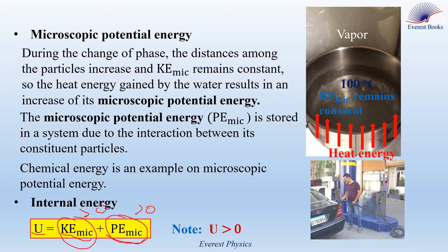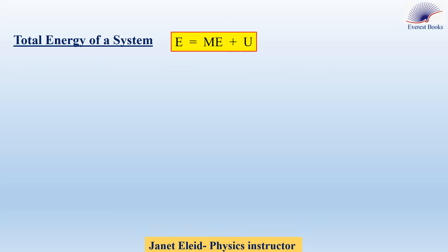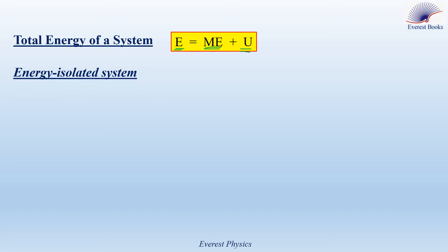After explaining the internal energy of a system, let's discuss the total energy of a system. The total energy is given by E equals ME plus U, where E is the total energy of the system, ME is its mechanical energy, and U is its internal energy.